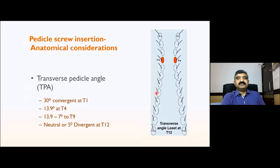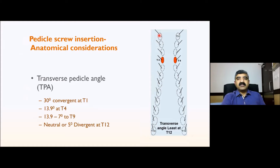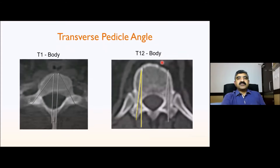The transverse pedicle angle is around 30 degrees convergent at T1, and it starts decreasing to almost neutral at T12 — around five degrees convergent or even five degrees divergent at T12. Most other levels are around 13 to 15 degrees. The transverse pedicle angle is calculated in two ways: one is the convergent angle between the transverse line along the spinous process and the pedicle. These values are already available and one need not do a CT scan to learn about this.